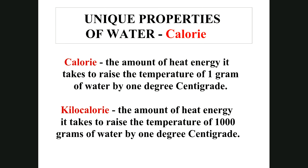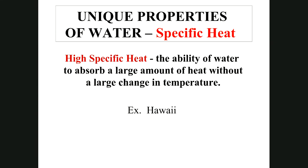Bomb calorimeters are devices that measure the caloric content of food. A food material is placed in a center tank filled with oxygen, sealed, and submerged in a known amount of water inside a cylinder with a thermometer. The material is ignited by a spark, burns quickly in the oxygen, and the heat absorbed by the water raises the thermometer a certain number of degrees Celsius — revealing how many calories were in that food.